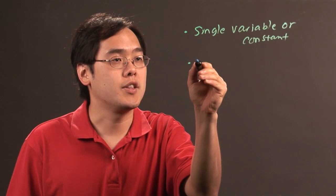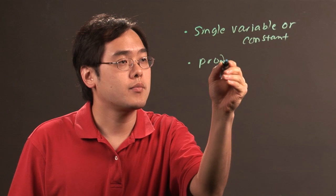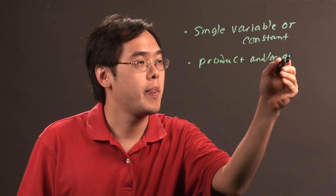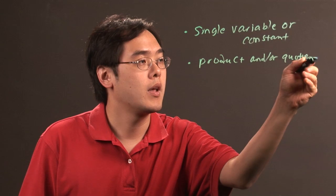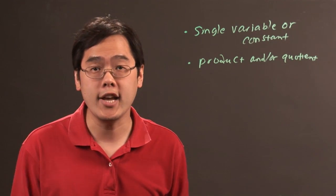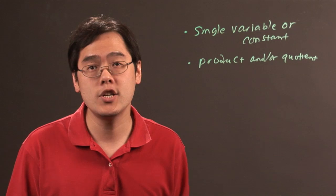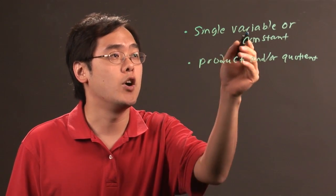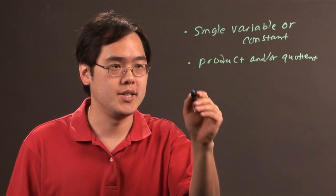Now another thing that you need is a product and or quotient of those variables and constants. As you know product involves multiplication, quotient involves division, but basically you need something multiplying or dividing, involving variables and or constants.